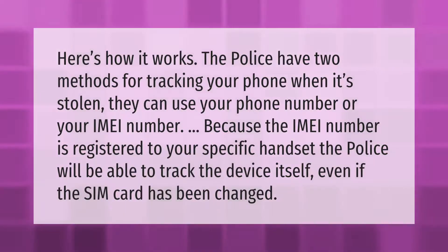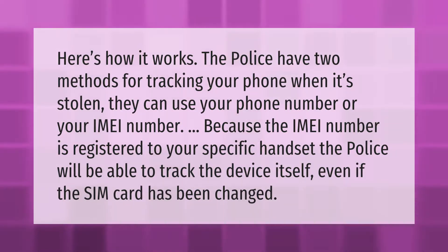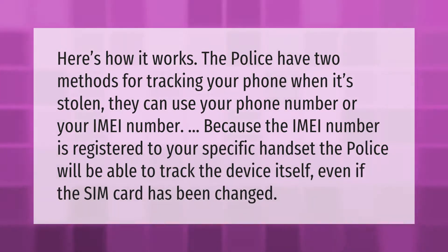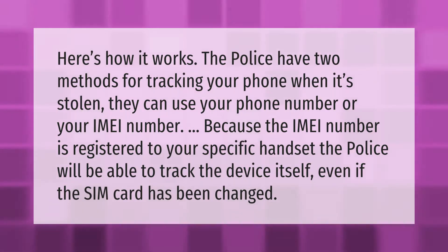The police have two methods for tracking your phone when it's stolen: they can use your phone number or your IMEI number. Because the IMEI number is registered to your specific handset, the police will be able to track the device itself even if the SIM card has been changed.